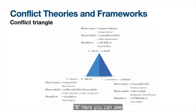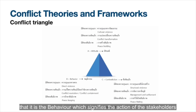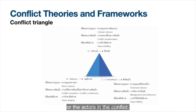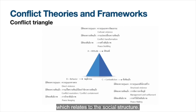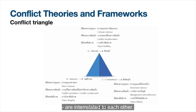B is Behavior, which signifies the actions of the stakeholders or actors in the conflict. And C is Contradiction — or the content of the conflict — which relates to the social structure or the situation of the conflict. These three points, A, B, and C, are interrelated to each other.